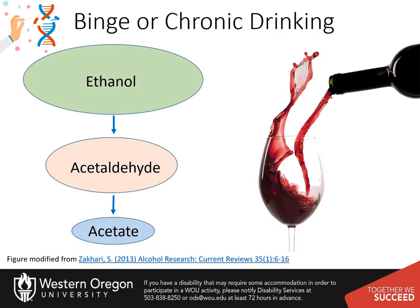During ethanol metabolism, when circulating ethanol is in the millimolar range, acetaldehyde is in the micromolar range, and acetate is in the millimolar range. When heavy drinking or chronic drinking occurs, the acetaldehyde dehydrogenase enzyme cannot keep up with the alcohol dehydrogenase enzyme, and the pool of acetaldehyde increases. This aldehyde has many toxic effects within biological systems.